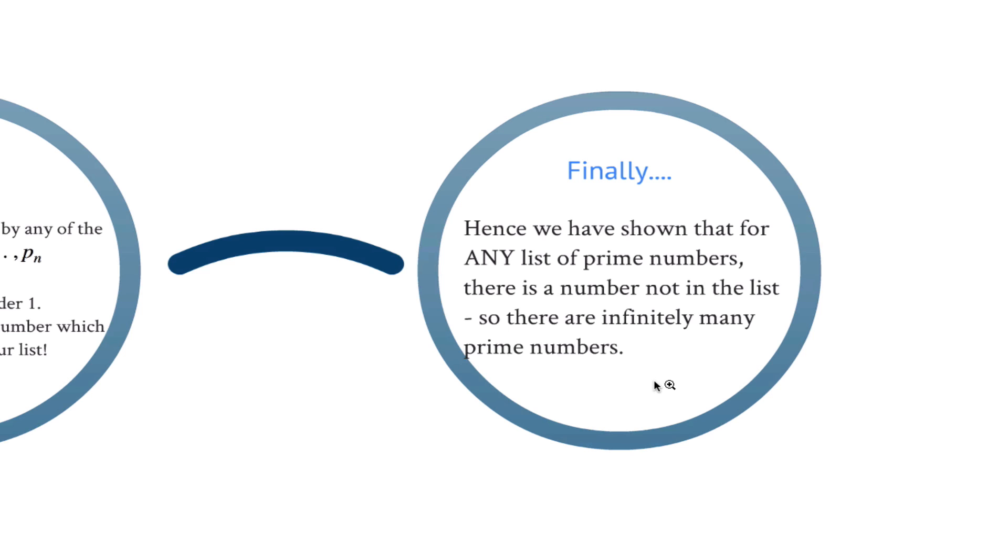Hence, we've shown that for any list of prime numbers, there is a prime number not in that list. And so, there are infinitely many prime numbers because if we take any number of prime numbers, we can always extend it and find one more.